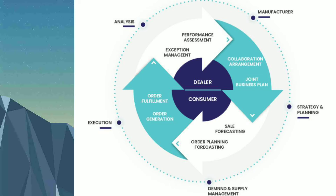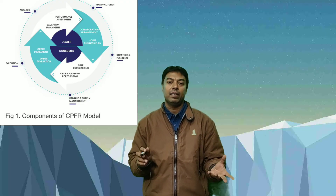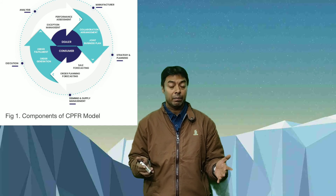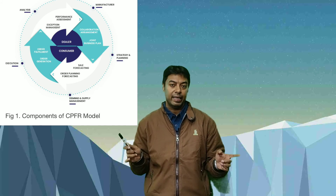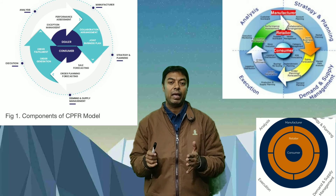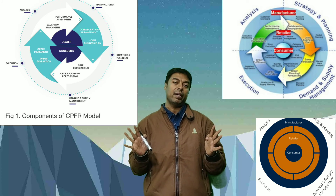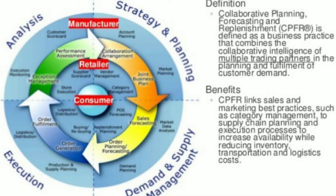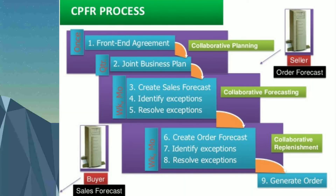These are all components of the CPFR model. In the center is the customer, which is the main catalyst for the product and demand. The customer is surrounded by retailer activities, and the outside ring contains the manufacturer and their activities. The model is divided into four quadrants: Strategy and Planning, Demand and Supply Management, Execution, and Analysis. Now presenting one more slide showing the CPFR process, which comprises nine steps.